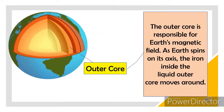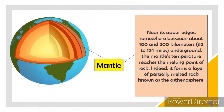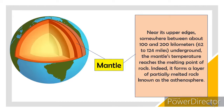The mantle is Earth's thickest layer at close to 3,000 kilometers thick. It starts at about 30 kilometers beneath the surface and is made mostly of iron, magnesium, and silicon. It is a dense, hot, semi-solid layer that circulates and moves slowly. Near its upper edges — between about 100 and 200 kilometers underground — the mantle's temperature reaches the melting point of rock, forming a layer of partially melted rock known as the asthenosphere.